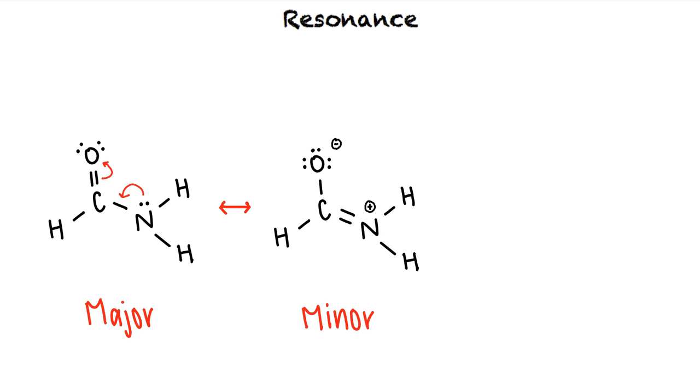Couldn't we push the electrons in the carbon-nitrogen double bond back into a lone pair on nitrogen, resulting in a positive charge on carbon? Hypothetically, yes. But this results in a structure that's even higher in energy than the minor resonance contributor. Because this structure contributes so minimally to the real structure, we call this an unreasonable resonance contributor.